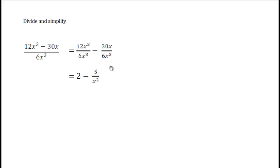Then, reduce each one separately. 6 into 12 goes 2 times x to the third into x to the third is 1. 2 times 1 is 2. 6 goes into 30 5 times. The 30 is on top. The 5 has to be on top. X goes into x cubed x squared times.